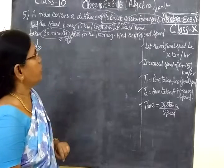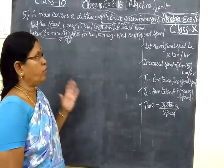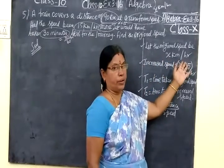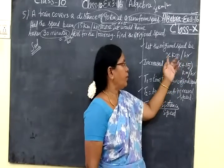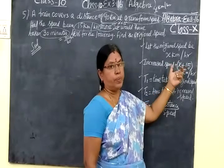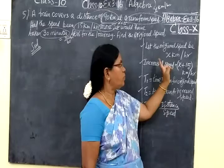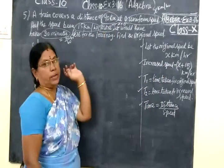A train covers a distance of 90 km at a uniform speed. Uniform speed is x km per hour. Speed means km per hour here. One hour is x km. Distance is each one. That is our uniform speed. That is our original speed. That is our x of intensity. Distance is 90 km.